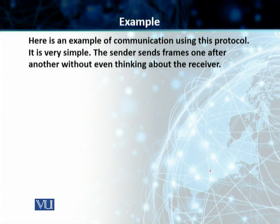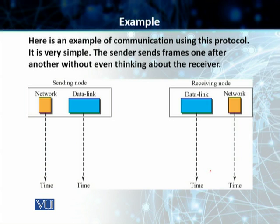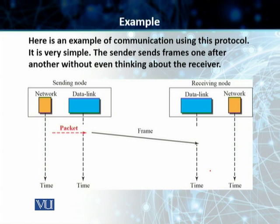An example case study shows communication happening between the sending node and the receiving node using the simple protocol. The sender sends frames one after the other without considering the receiver, because there is no flow control and no error control. The packet comes down from the network layer at the sending node, the data link layer frames it and sends it. The receiving node extracts the packet and sends it to the network layer, and this process carries on without any acknowledgement, without any flow control, without any error control. The sender keeps sending and the receiver keeps receiving.